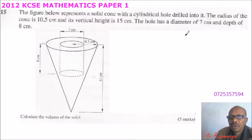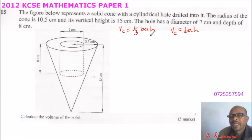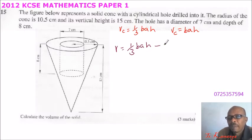So we know how to get the volume of a cone. Volume of a cone is equal to a third base area multiplied by height. Volume of a cylindrical hole is equal to base area times height. So we need to get the volume of the whole cone minus the volume of the hole. So we say volume is equal to a third base area times height, that is the volume of the cone, minus base area times height. So this is the cone and this is the hole.